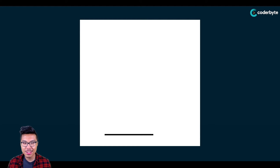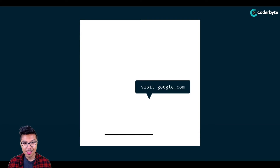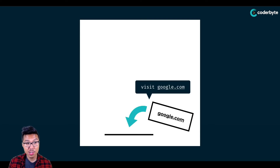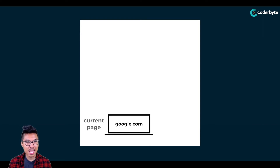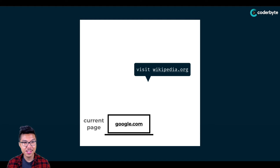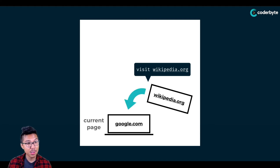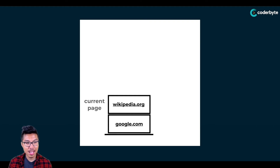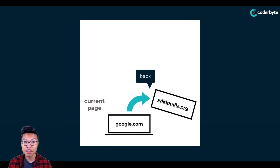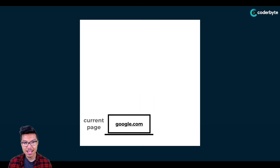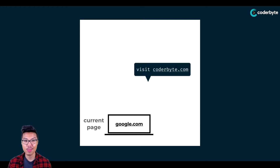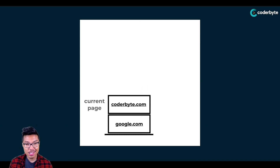Let's visualize how we can use a stack to track our browser's history. Here I have the stack, and let's say I start by visiting google.com — that means I push Google onto the stack. Since Google is at the top of my stack, it's the current page I'm looking at. Now let's say I visit Wikipedia — I push it to the top. Now since Wikipedia is on top, that means I'm currently looking at Wikipedia. If I click the back button, I pop the top of our stack, removing Wikipedia. Now Google is at the top, so we're back at Google. Now I visit coderbyte.com — it gets added to the top, and you can see how this pattern holds as we visit more sites or hit the previous button.